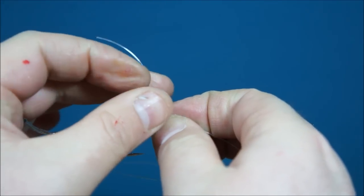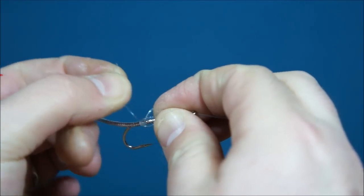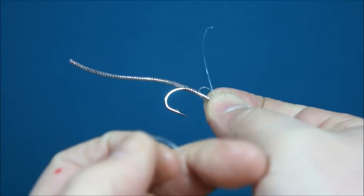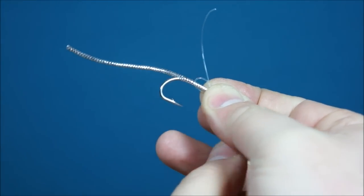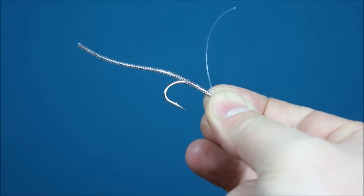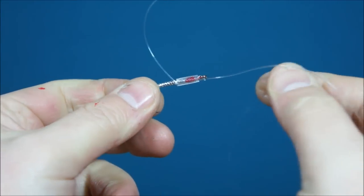And I'm going to take this tag end now and pass it through that second loop. There we go. And that's going to leave me just to pull that loop up. And I'm going to take the other end of the line and pull that gently. That should close up the knot. There.